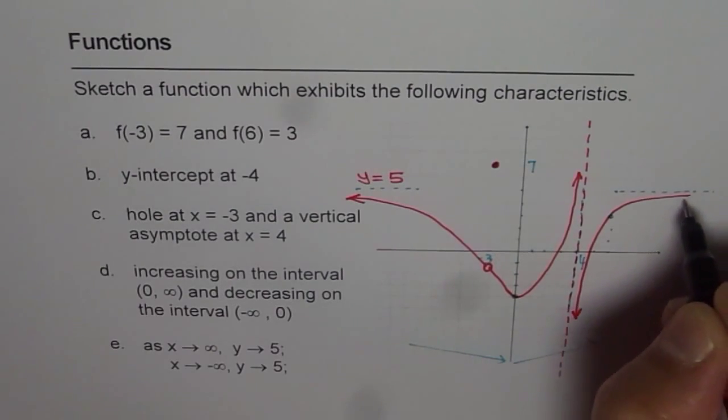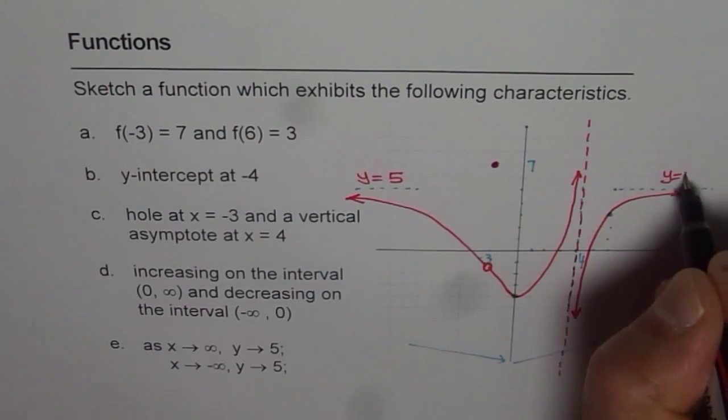So that is the vertical asymptote, and this is our horizontal asymptote, y equals 5.